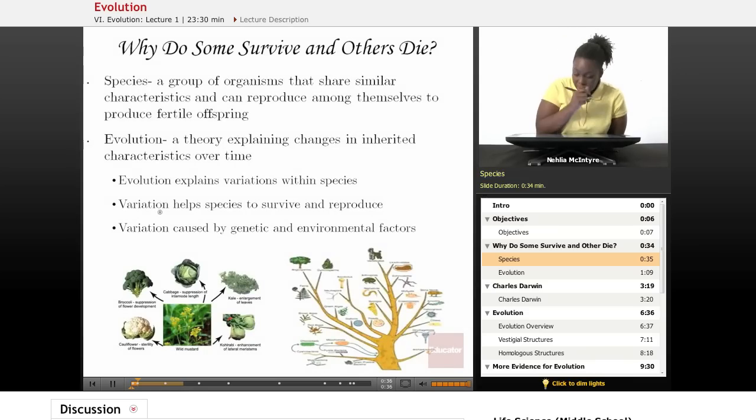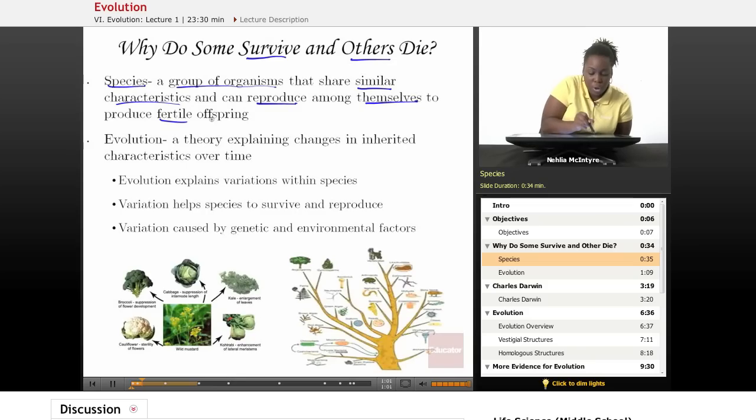Let's start off by talking about what a species really is and how does that fit into the theory of evolution. So why do some species survive and why do others die? First of all, let's define what a species is. A species is a group of organisms that share similar characteristics and can reproduce among themselves to produce fertile offspring.